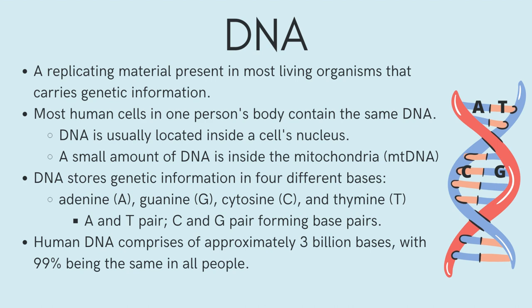Human DNA consists of about 3 billion bases, and more than 99% of those bases are the same in all people. The order, or sequence, of these bases determines the information available for building and maintaining an organism, like the way in which letters of the alphabet appear in a certain order to form words and sentences.